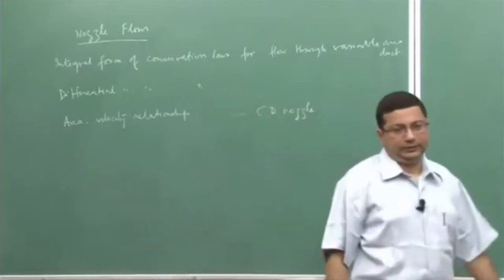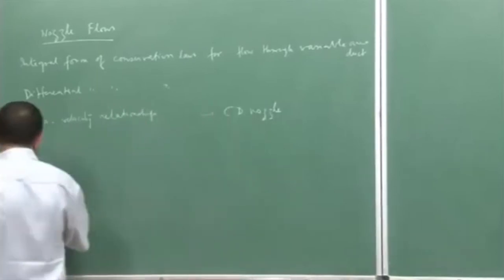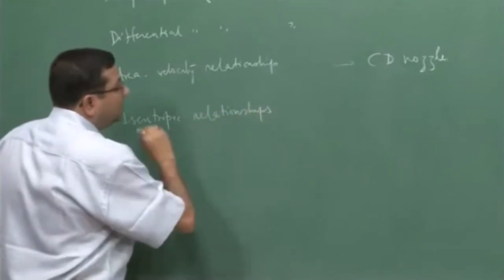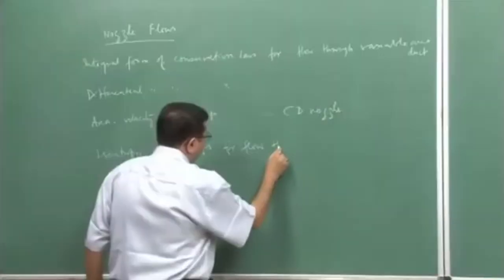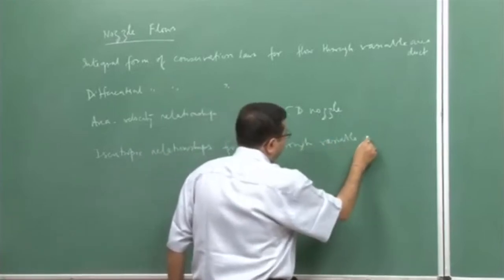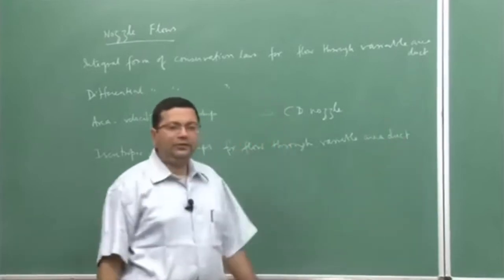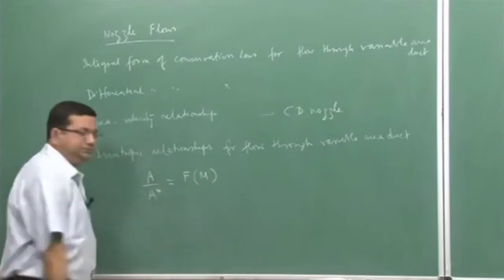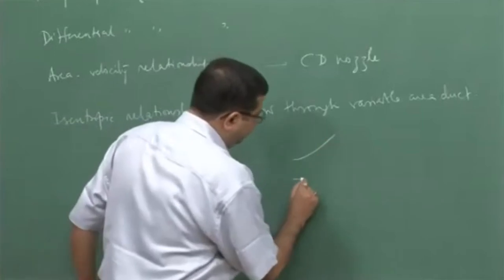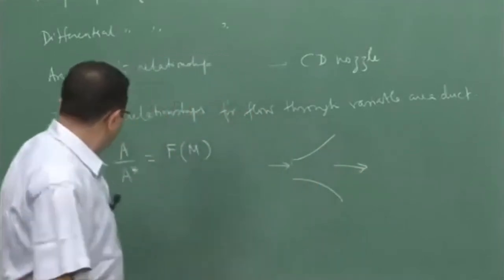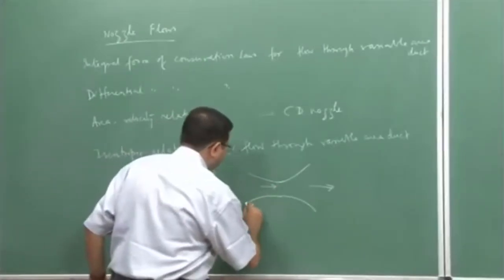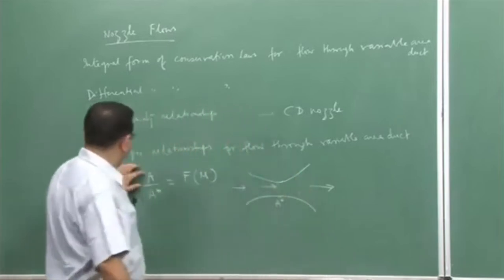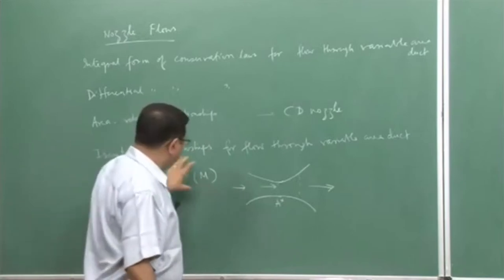We have discussed and proved this. After that, in the last lecture, we derived the isentropic relationships for flow through a variable area duct. We derived the relationship for the area ratio as a function of Mach number. We are discussing a flow through a converging-diverging duct. The minimum area is A*, which is the throat area. At any location where area is A, we have a Mach number M from the isentropic relationship.